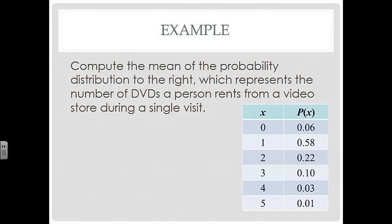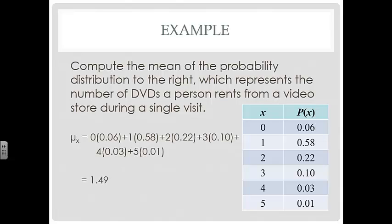We're going to compute the mean of the probability. We're going to take all of the X values and multiply them by their probabilities, and then we're going to add all of those values up. So we get 1.49. The mean of this probability distribution is 1 and a half videos.